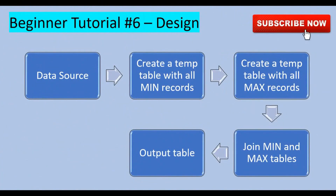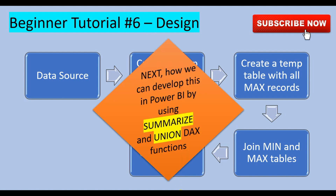In terms of design, here's how we do this: we have the data source, then we create a temp table with all the minimum records — name, subject, and the minimum marks, those three columns. Then again we create a temp table with all the maximum records, which also contains name, subject, and the maximum marks. Then I join the min and max tables to get the output table. That will be my design today.